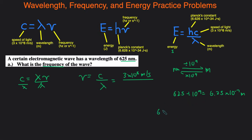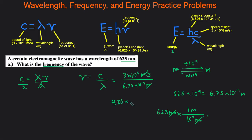Or if you need to show your work with dimensional analysis, you can do 625 nanometers multiplied by 1 meter over 10 to the 9 nanometers — that way the nanometers cancel out and you get the same number. Now we can plug that in: 6.25 times 10 to the negative 7 meters. Notice the meters cancel out. Then we enter this into our calculator: 3 times 10 to the 8th divided by 6.25 times 10 to the negative 7, and we get 4.80 times 10 to the 14th. We can report frequency as either hertz or seconds to the negative 1.